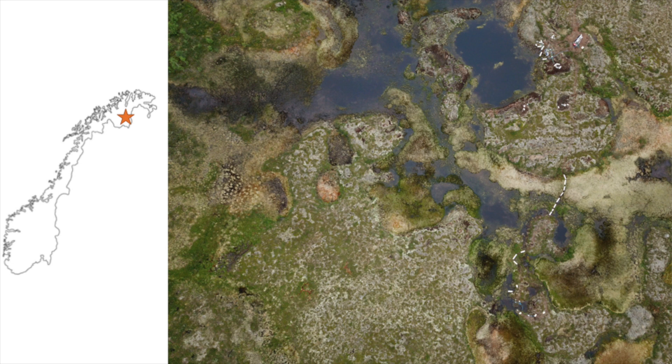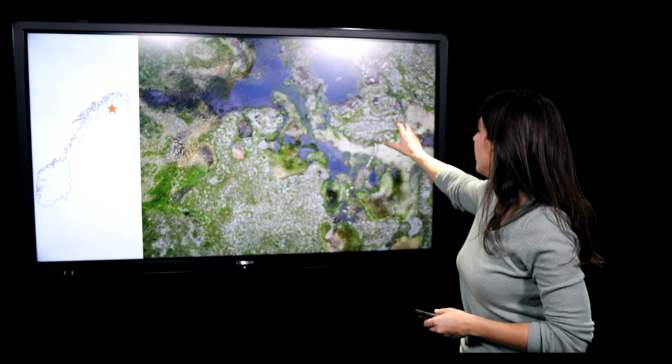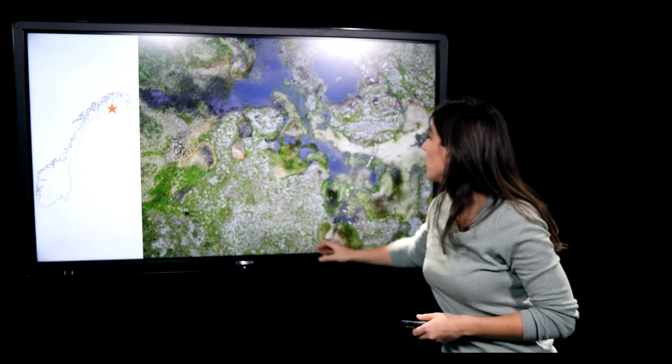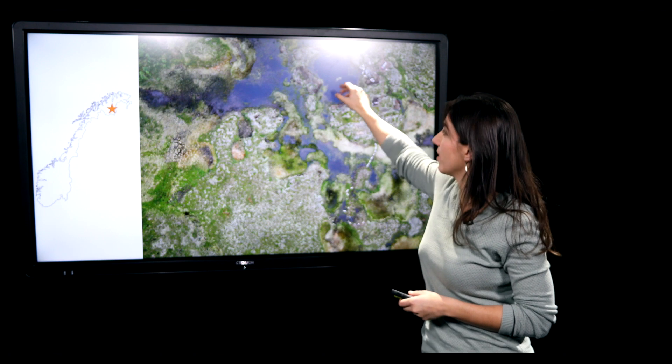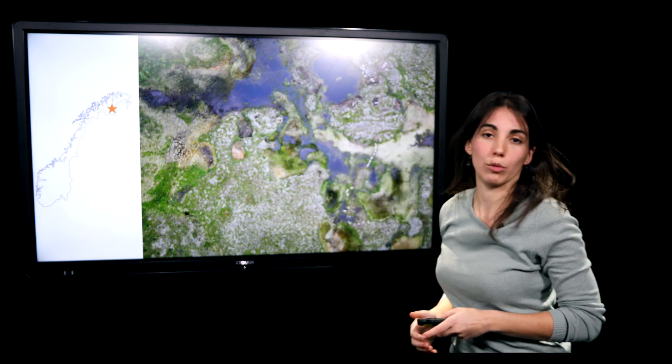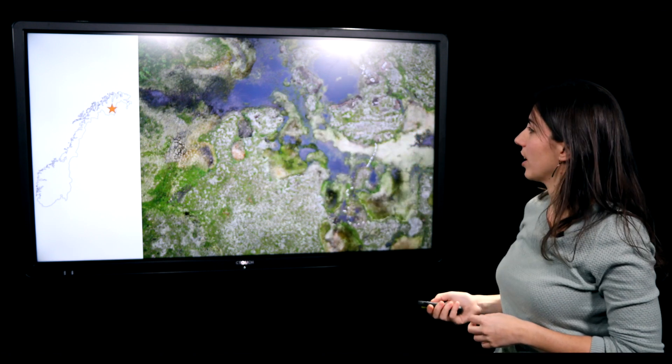This is our research site in Northern Norway, where we can see the intact permafrost in these areas, but also the degradation of permafrost which is creating thaw ponds, which is the watery areas in the picture.